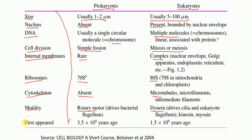Prokaryotes first appeared 3.5 × 10⁹ years ago, whereas eukaryotes first appeared 1.5 × 10⁹ years ago. I hope this video was helpful. Thank you very much for your kind attention.